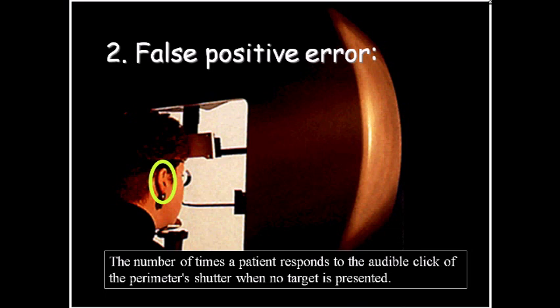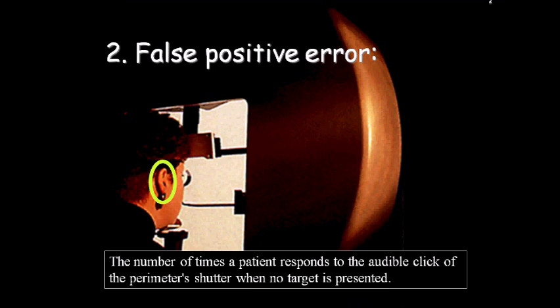False positive error: when putting the stimulus, the machine makes an audible sound, and the patient may learn to respond to that sound. To avoid this problem, in between stimuli the machine will send the audible sound without any stimulus. If the patient responds that he sees the light, we call this a false positive — the patient is responding to something he thinks he sees, although there is no visual stimulus, only an audible one. Again, this number should be less than one-third of the times tested.